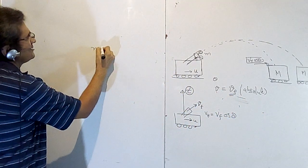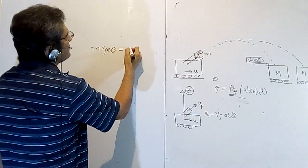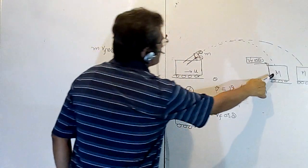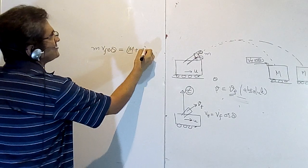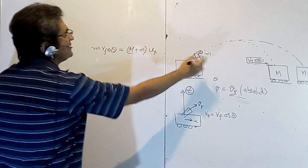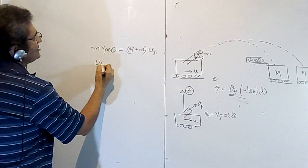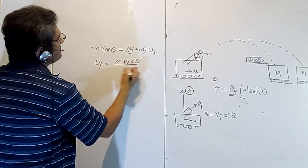So U final is equal to M Vf cos theta upon (M plus m).